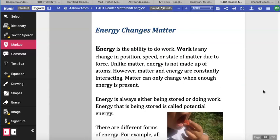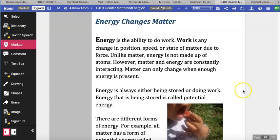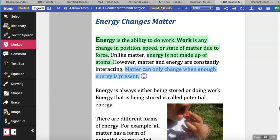Energy changes matter. Energy is the ability to do work. Work is any change in position, speed, or state of matter due to force. Unlike matter, energy is not made up of atoms. However, matter and energy are constantly interacting. Matter can only change when enough energy is present.